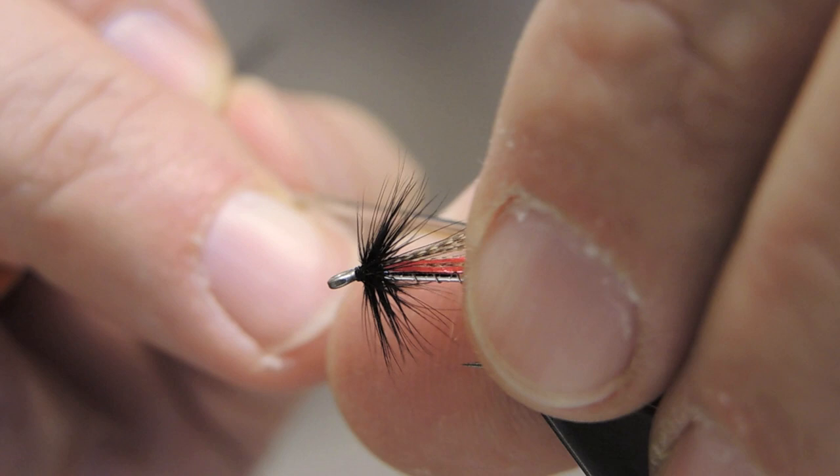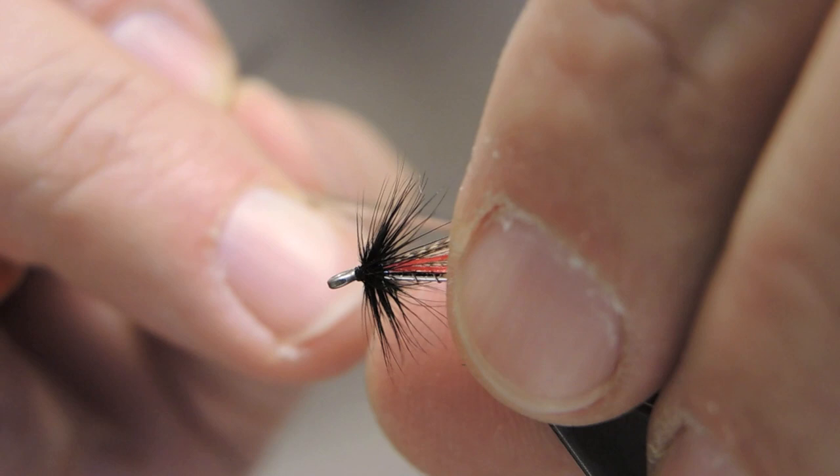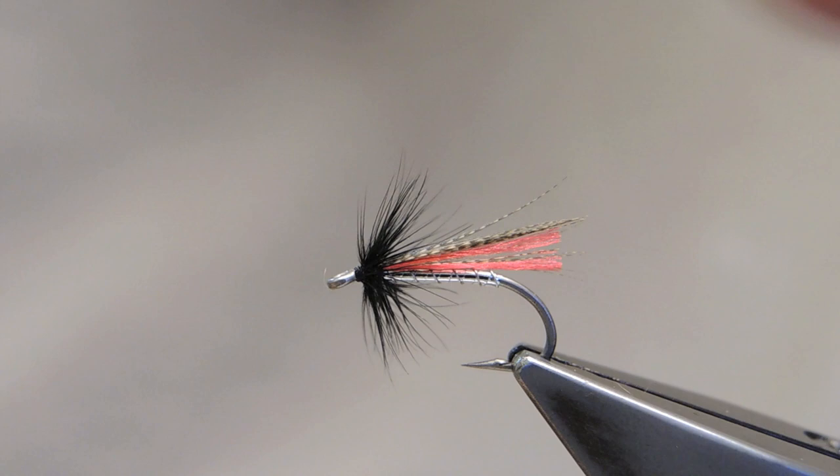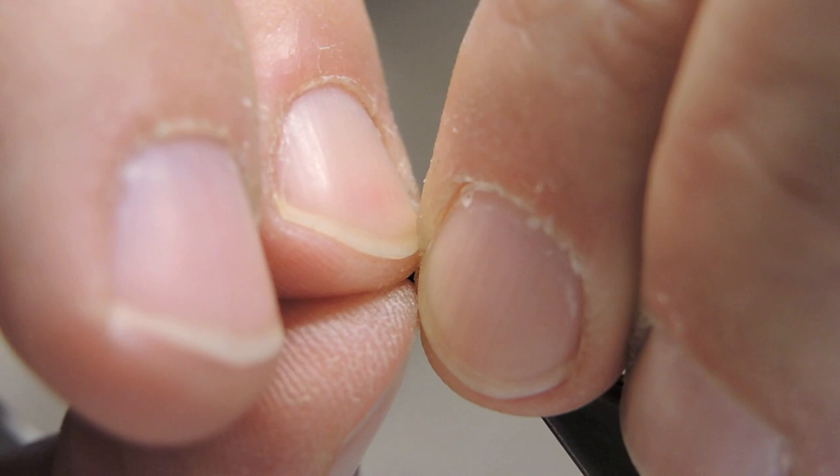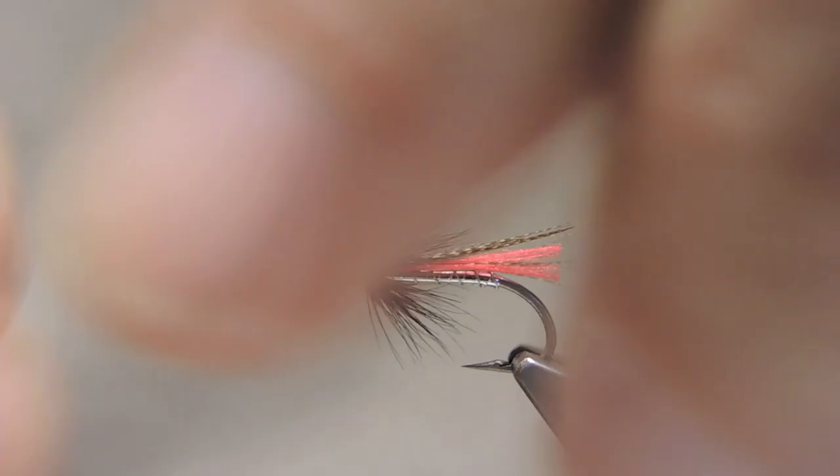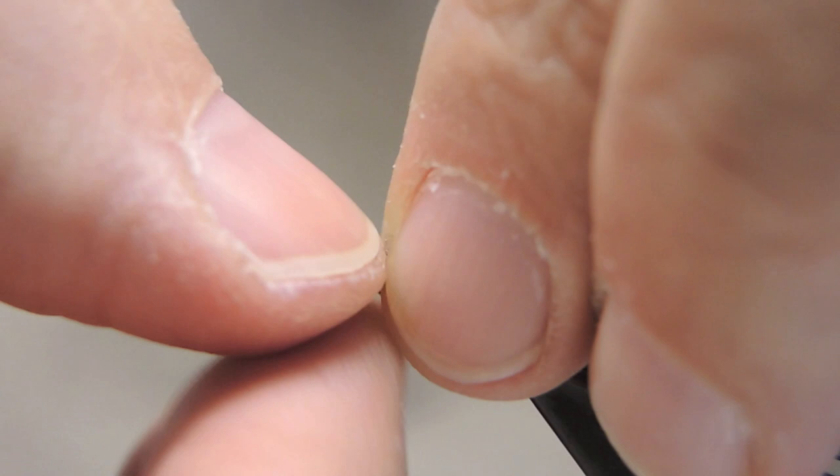Do a bit more with a dubbing needle just to spread the Glowbrite a little more. Then angle the hackle back a bit more with some finger pressure.